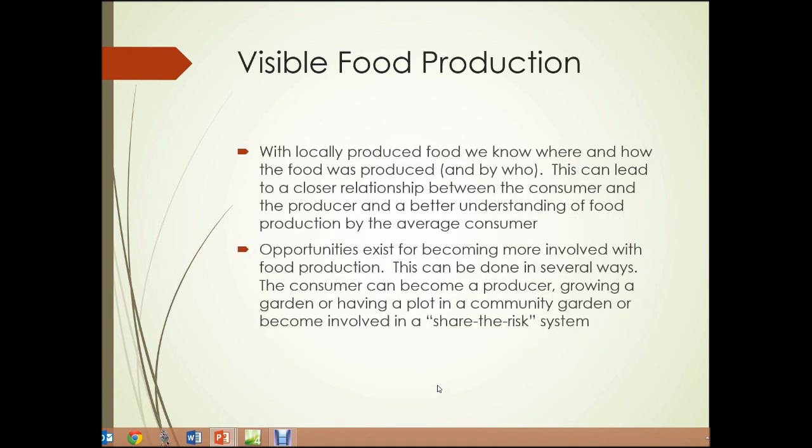Visible food production: with locally produced food, we know where and how the food was produced and by whom. This can lead to a closer relationship between the consumer and the producer, and a better understanding of food production by the average consumer. Opportunities exist for becoming more involved with food production. The consumer can become a producer — growing a garden, having a plot in a community garden, or becoming involved in a share-the-risk system.